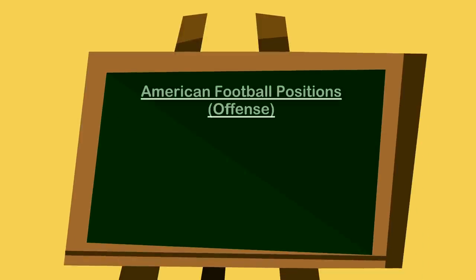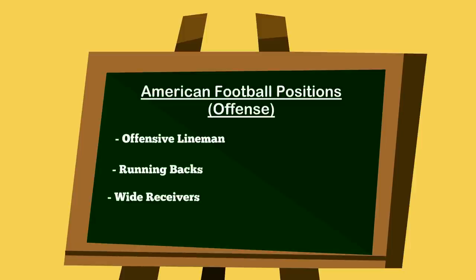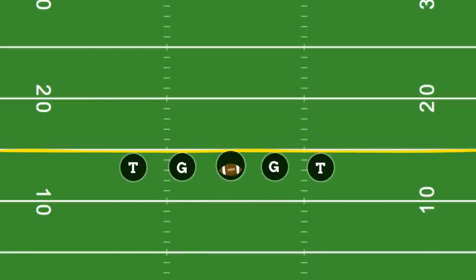Today we're going to be teaching you about American football positions. We're going to be looking at the offense and the defense, but to start we're going to look at the offense. There are four position groups for the offense: the offensive linemen, the running backs, the wide receivers, and the quarterback.